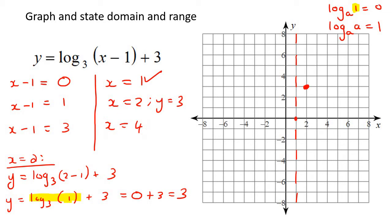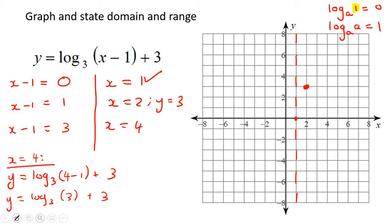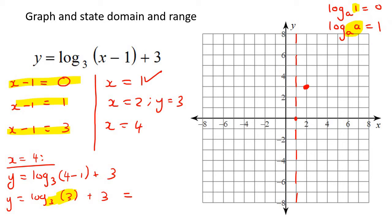Let x equal to 4. Replacing into the equation gives y equals log base 3 of 3, add 3. Here we use the property where those two numbers are the same, so this first part equals 1. That's 1 add 3, which gives us 4. So when x is 4, y is 4. Now we can draw the graph — because we have an asymptote, the graph goes next to it and then keeps going like that.